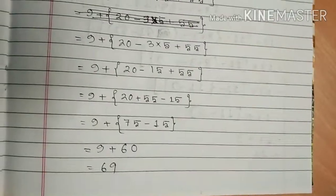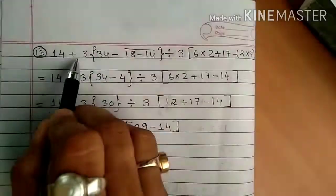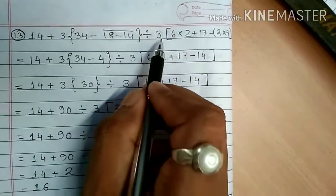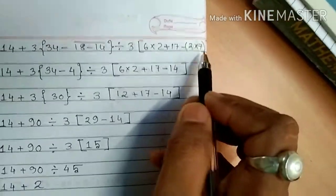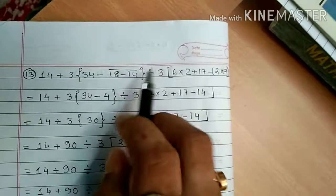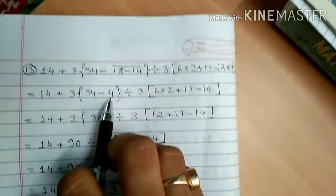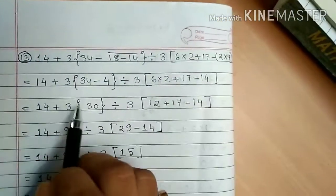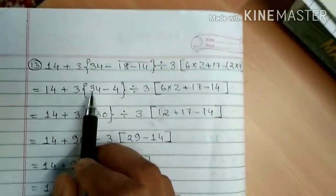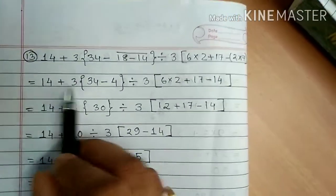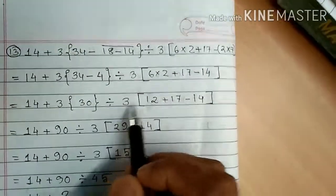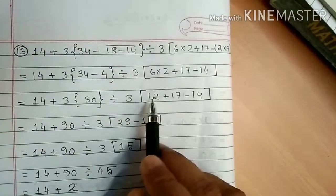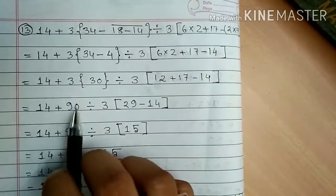Question number 14: 14 plus 3 {34 minus (18 minus 14) bar divide 3} [6 into 2 plus 17 minus 2 into 7]. First we do the line bracket: 18 minus 14 gives 4, and 2 into 7 gives 14. Next, the curly bracket: 34 minus 4 gives 30. And in the big bracket: 6 into 2 gives 12, so 12 plus 17 minus 14.